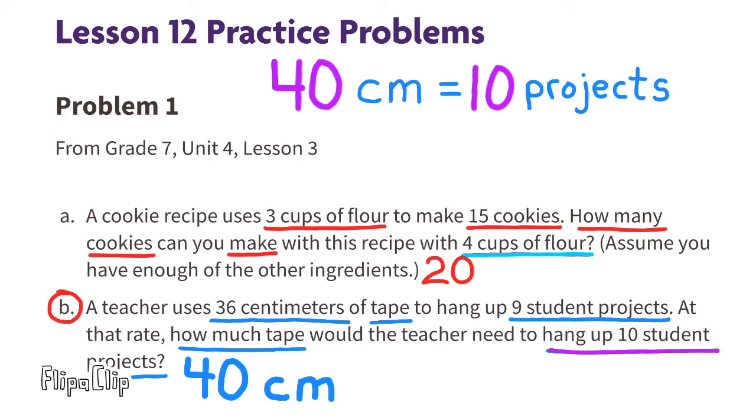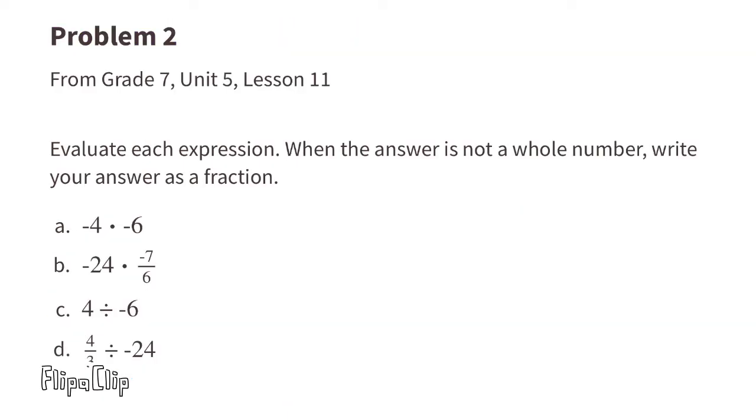Problem number two, from seventh grade Unit 5 Lesson 11: Evaluate each expression. When the answer is not a whole number, write your answer as a fraction. Part a: This is a negative times a negative.